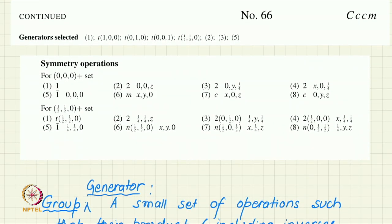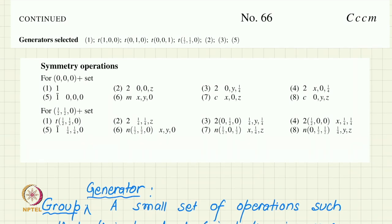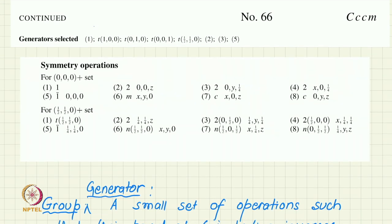Other selections of generators are possible, but one specific recommended selection is given in the international tables. This appears at the top of the second page under 'generators selected,' and these are the generators selected for space group number 66. Some are given as serial numbers, which is why I have kept the symmetry operations block nearby to refer to — those serial numbers refer to the operations listed there.